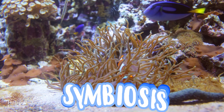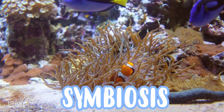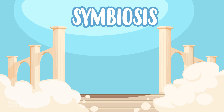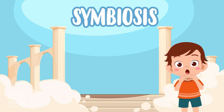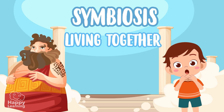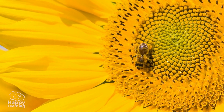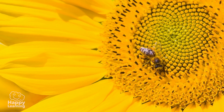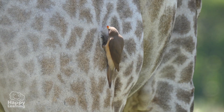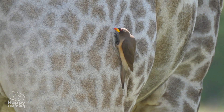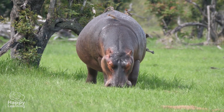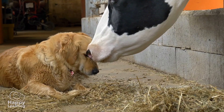Symbiosis! What a strange word — have you ever heard of it? It comes from a Greek word which means 'living together,' and that's exactly what happens in symbiosis: two completely different species which have nothing to do with each other unite and live together very closely.